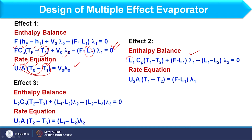For the second effect, L1, T1, and T2 are all unknown, and A, T1, and T2 are unknown, making that equation non-linear. Similarly for the third effect equation, L2 and T2 are unknown, and A and T2 appear as unknown terms. So we can find that some equations are linear in nature and some are non-linear. However, if a single equation in a set is non-linear, we consider the complete set as non-linear.